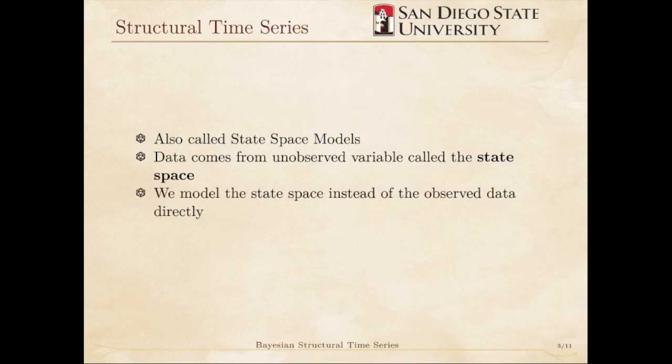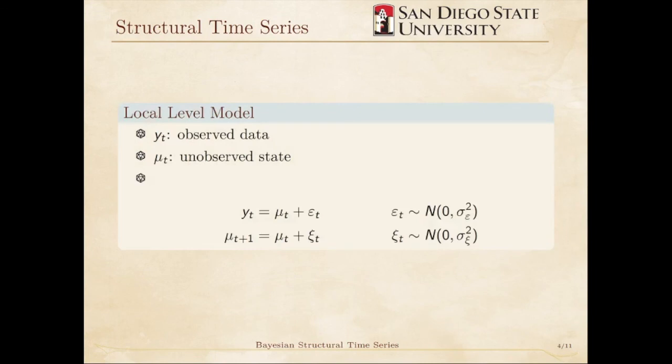We attempt to model the unobserved State Space instead of directly modeling the data. The simplest of these models is called the Local Level Model. Here, we use Yt to denote the data, and MuT to denote the unobserved state. The model looks like this.